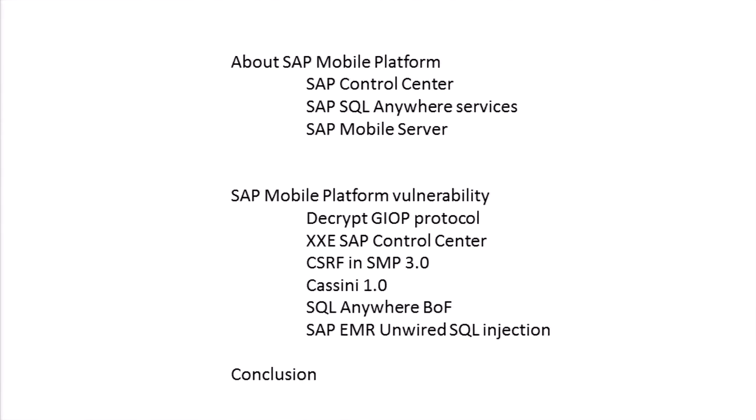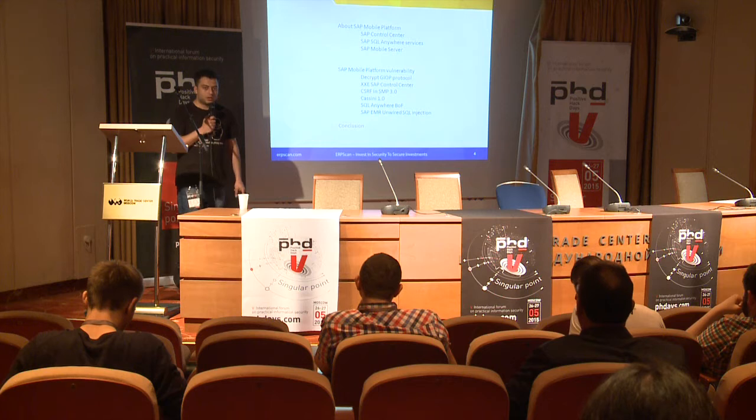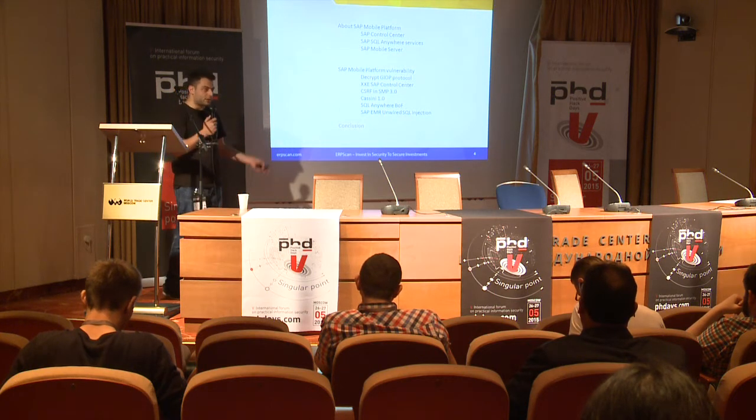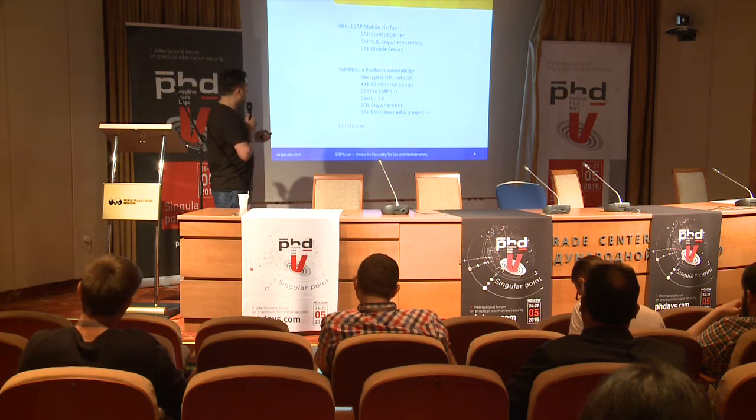Today, my presentation is divided into three main parts. In the first part, we will learn about SAP Mobile Platform, its main components, how they function, and how they correlate to each other. The second part will be dedicated to SAP Mobile Platform vulnerabilities that we have discovered. In the third part, I will tell you some conclusions and what is to be done in order to minimize the threat if an attack happens against your SAP mobile system.